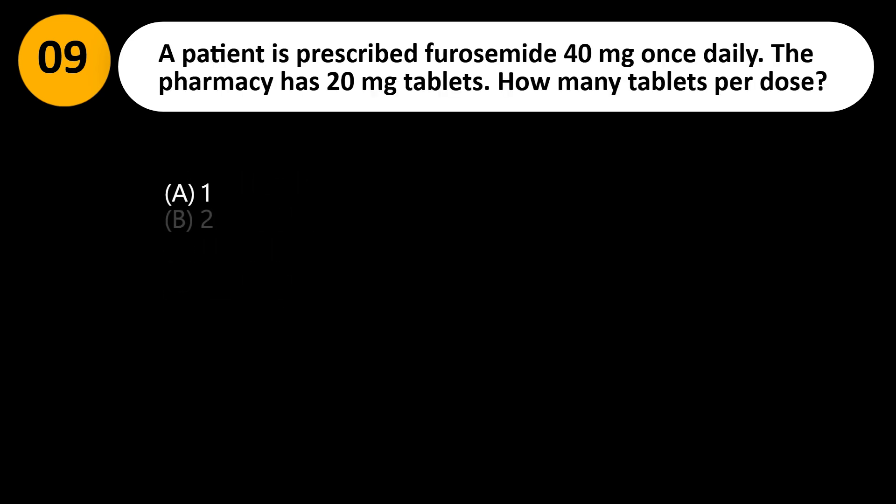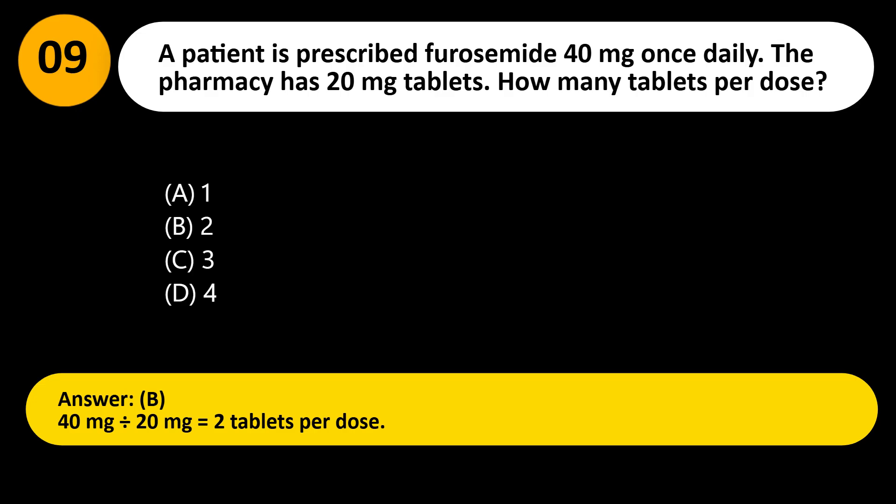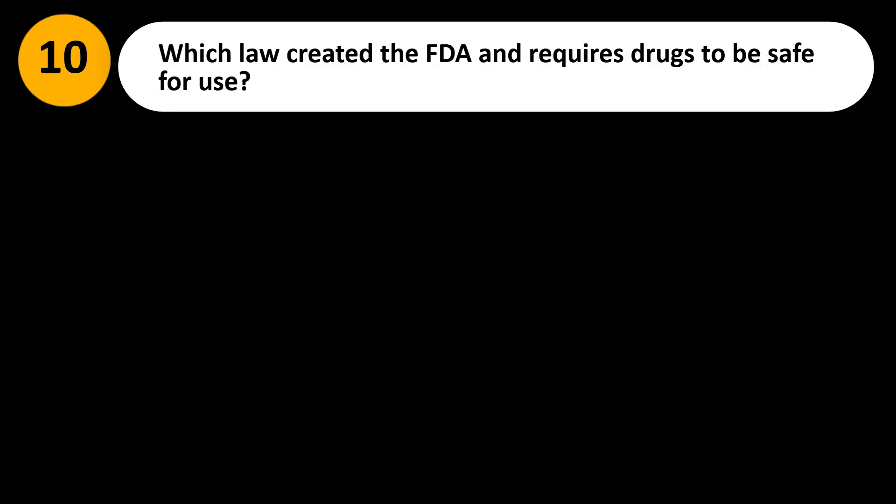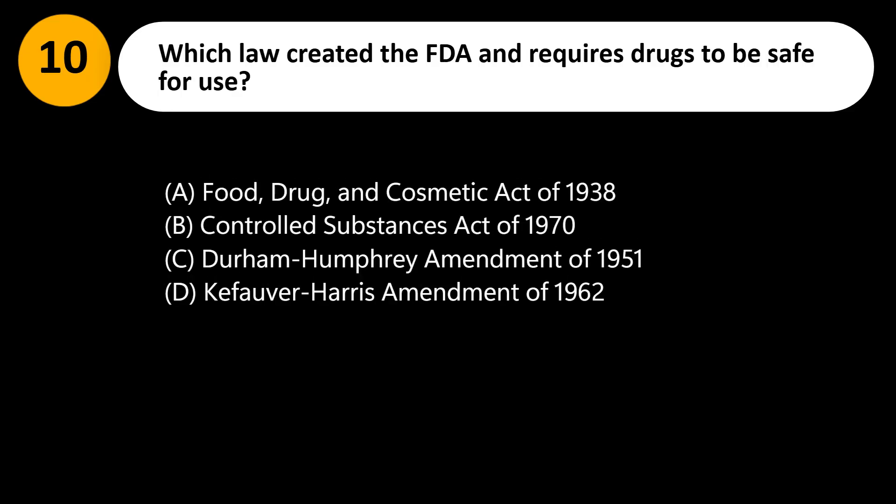A patient is prescribed furosemide 40 mg once daily. The pharmacy has 20 mg tablets. How many tablets per dose? A. 1. B. 2. C. 3. D. 4. Answer: B. 40 mg divided by 20 mg equals 2 tablets per dose.